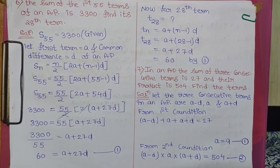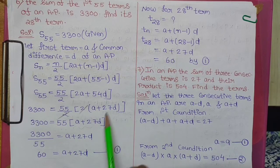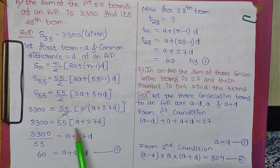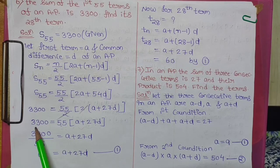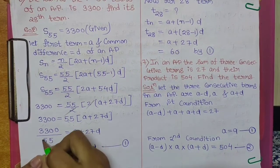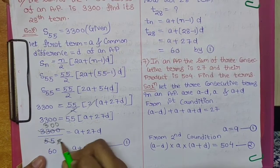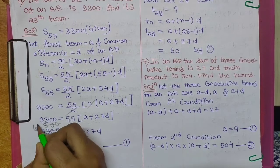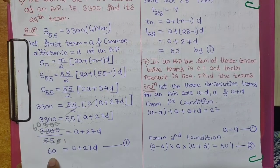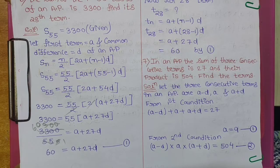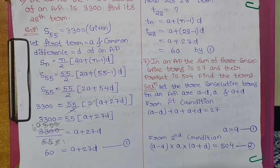After cancellation, we have 55 × (A + 27D) = 3300. Shift 55 to the other side — it divides: 3300 ÷ 55 = 60. So 60 = A + 27D. We'll call this Equation 1. We can't simplify further without knowing A and D individually, so we stop here.